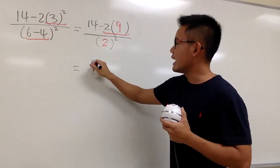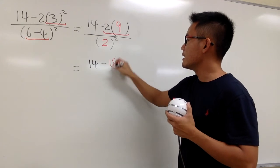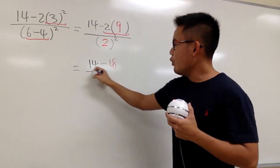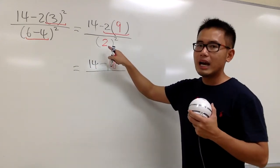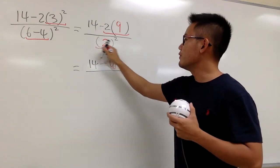This is 14, let's write it down. And then, minus 2 times 9 is 18, like that. Over, on the bottom, we have 2 squared, meaning 2 times 2. So we know this is going to be 4.